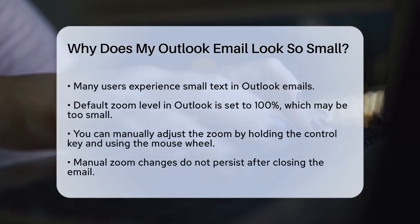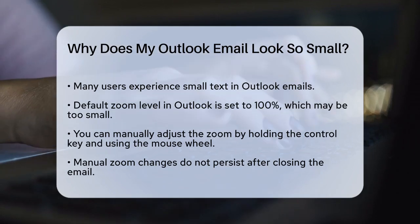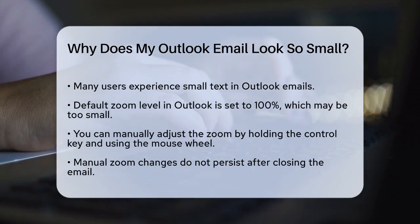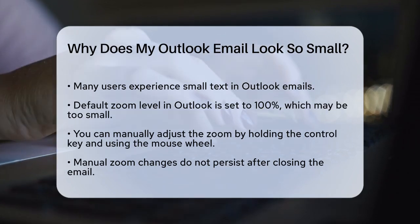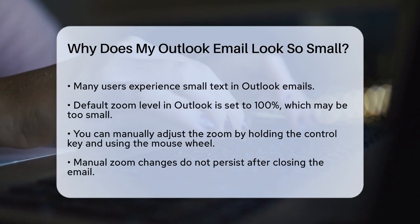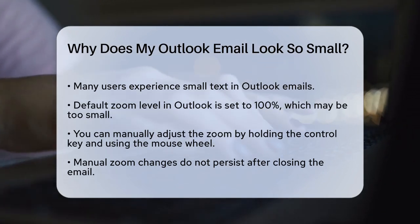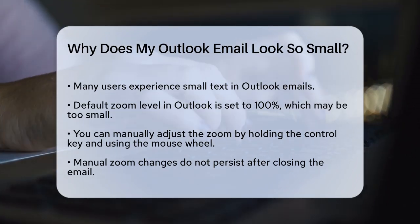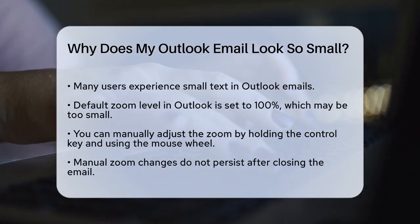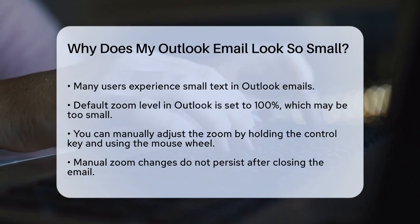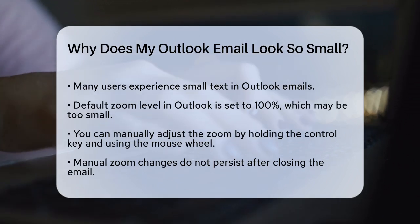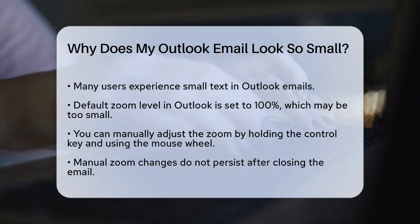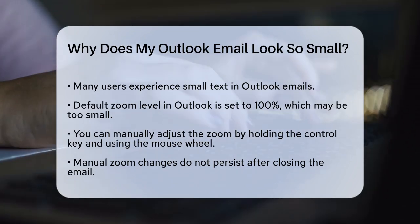First, it's possible that the default zoom level in Outlook is set too low. By default, Outlook sets the zoom level to 100%, which can be too small for many people. To change this, you can adjust the zoom level manually. When you open an email, you can hold down the Control key on your keyboard and use your mouse wheel to zoom in. However, this change won't stick if you close and reopen the email.